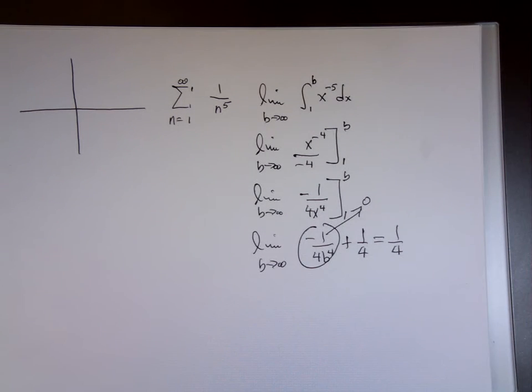Because that limit is 1 fourth, because it exists, the integral test says that series converges. Now does it mean the sum of that series is 1 fourth? No, it does not mean that. But it does mean it does have a sum. Okay, that's it? Very nice, good deal. Okay, any other questions at all?